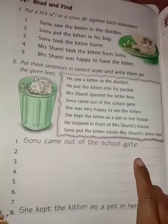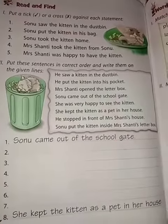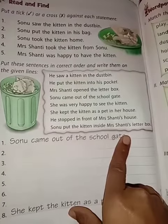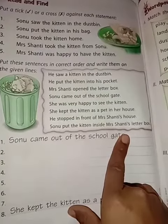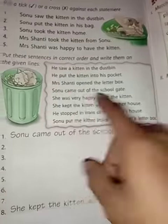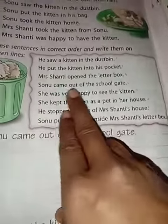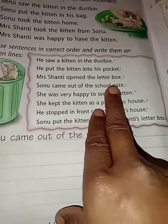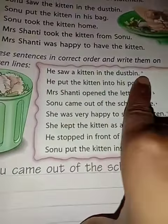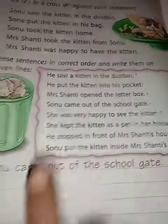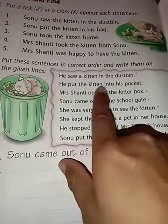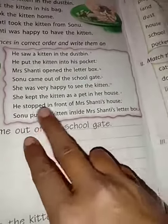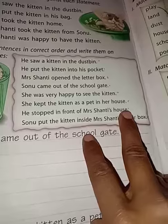Now you have to write the full story in a complete sequence. First of all, Sonu came out of the school gate — Sonu sabse pehle school gate se bahar aaya. Then what happened? He saw a kitten in the dustbin — dustbin mein kitten dekha. He put the kitten in his pocket. Then he stopped in front of Mrs. Santi's house.